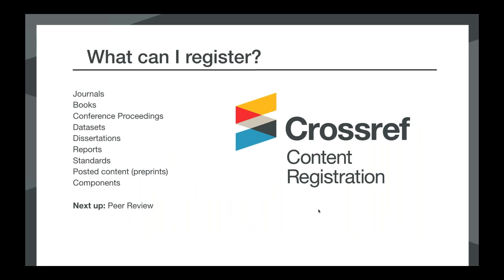So what content can you register? We split content into several defined content types. You can currently register journals and journal articles, books and book chapters, conference proceedings and papers, reports and working papers, dissertations, standards, posted content, datasets, and supplemental materials. We are going to be launching a new content type — peer review reports — very soon, within the next few days.